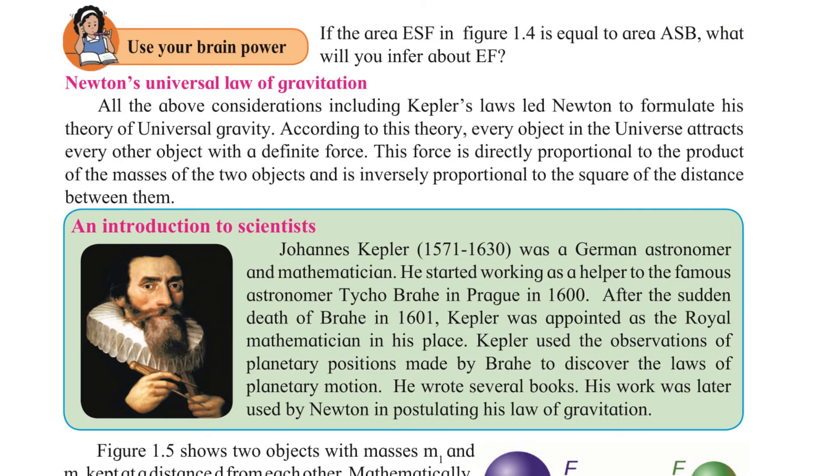Let's go to Newton's universal law of gravitation. All the above considerations, including Kepler's laws, led Newton to formulate his theory of universal gravity. According to this theory, every object in the universe attracts every other object with a definite force. This force is directly proportional to the product of the masses of the two objects and is inversely proportional to the square of the distance between them.